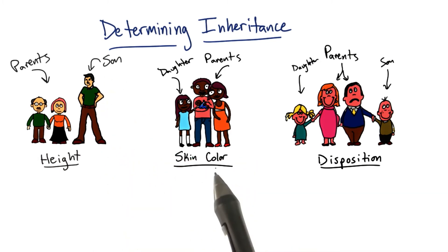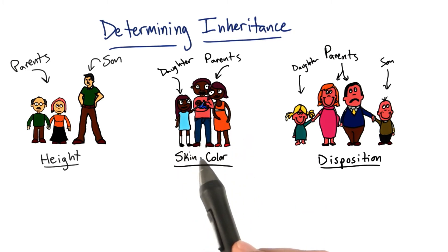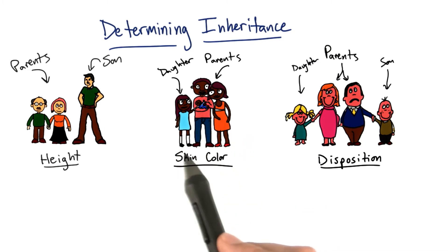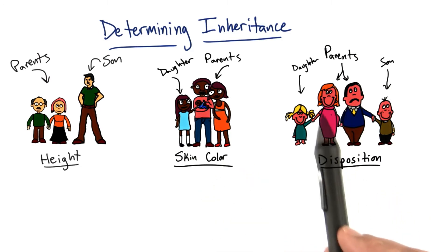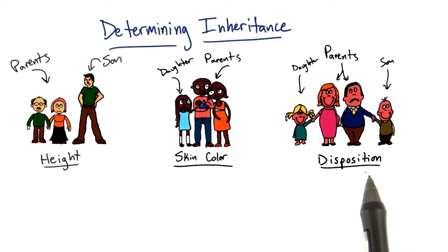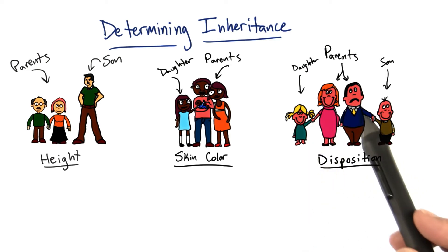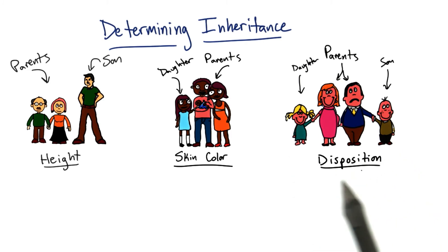We have a family where the parents have a daughter and a little baby, and they all share the same skin color, roughly speaking. And in this third family, we have one parent who has a disposition of being happy all the time, and the other parent has a disposition of being sad all the time. Both the daughter and the son have a disposition of being happy.